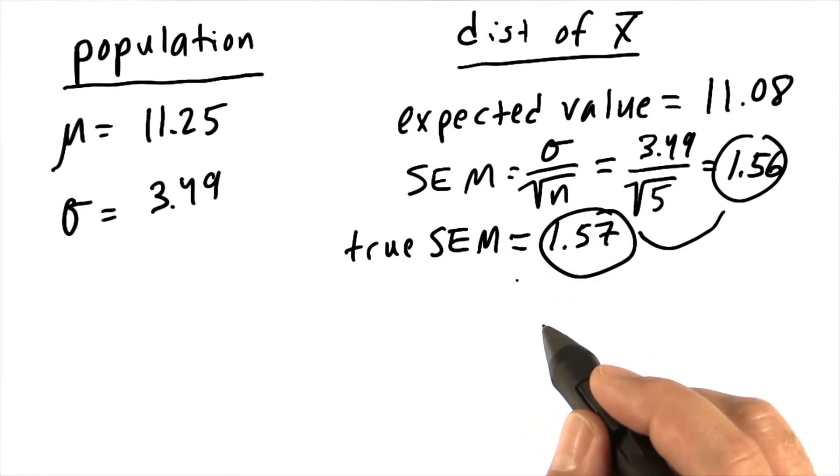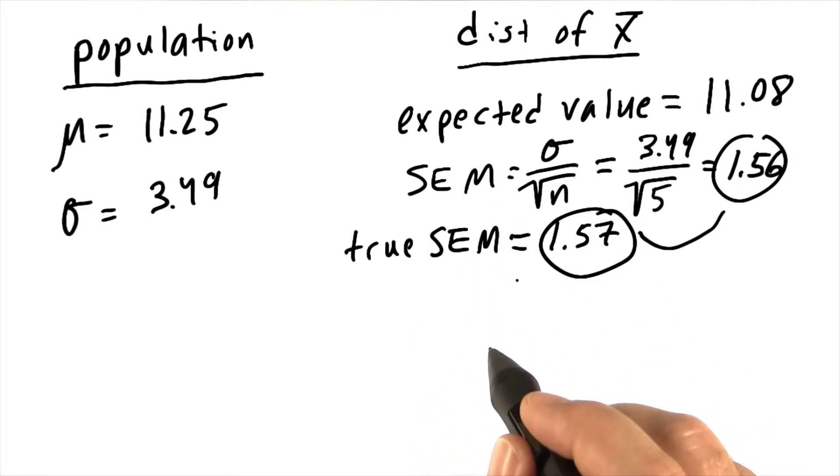In checking the distribution of sample means, the sampling distribution of the mean here was approximately normal. Not perfectly normal, but pretty close.